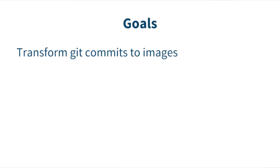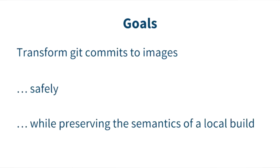At its base, we're just transforming git commits to images — it's just docker build dot. So why is that even hard? First of all, we're trying to do it safely; we have to run this on our servers and ensure that giving you control to run code does not cause any exploits. We also want to completely accurately preserve the semantics of the local build. Any time you run docker build locally and it succeeds but the same build fails in Quay, we've failed.